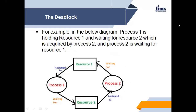Let's see this deadlock with the help of a figure. There are two processes: P1 and P2, and there are two resources: R1 and R2. Resource R1 is assigned to process P1 and resource R2 is assigned to process P2. Process P2 is waiting for resource R1 and process P1 is waiting for resource R2. Since resource R1 is acquired by process P1 and resource R2 is assigned to process P2, this is the condition of deadlock.